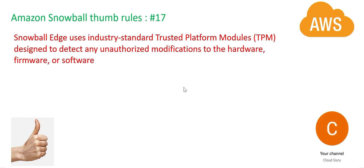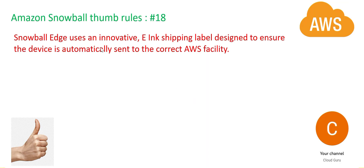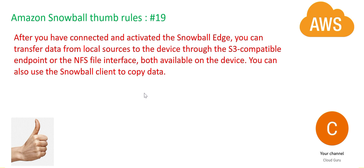Snowball Edge uses the TPM design and standards — it will detect any unauthorized modifications to the hardware, firmware, or software. Another advantage is that Snowball uses an e-ink shipping label. When your data is copied, it will automatically display the shipping label containing the address where UPS will take it back. So it cannot happen that by mistake you used the address of a different AWS center — that cannot happen.